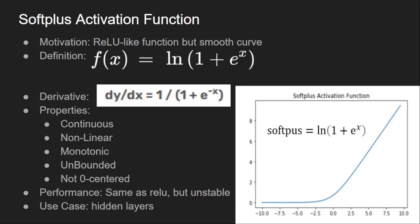The next activation function is Softplus. The motivation came from looking for a function like ReLU but that should be continuous. The definition is ln(1 + e^x). The curve looks almost like ReLU except it is smooth around the zero region. Notably, the derivative of Softplus is the sigmoid function. It is a continuous, non-linear, monotonic function and is unbounded on the positive side but bounded on the negative side just like ReLU.